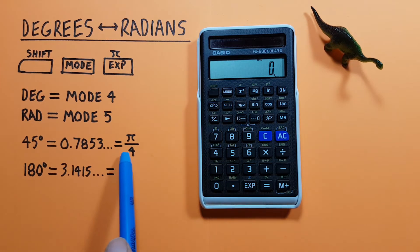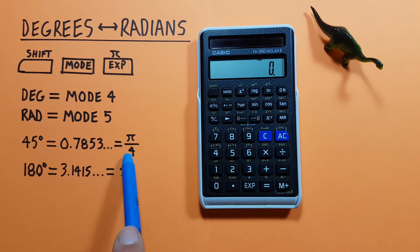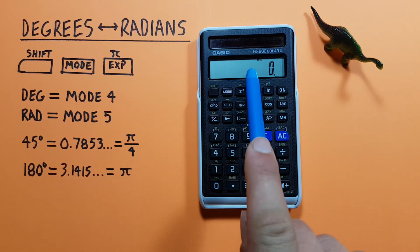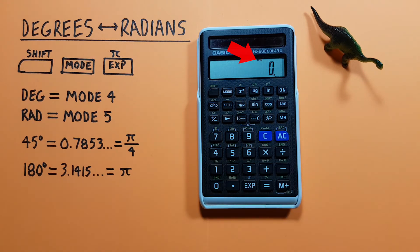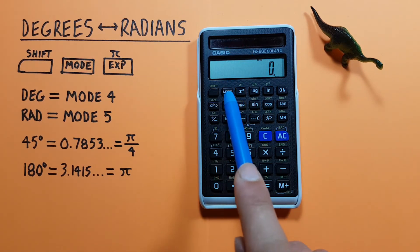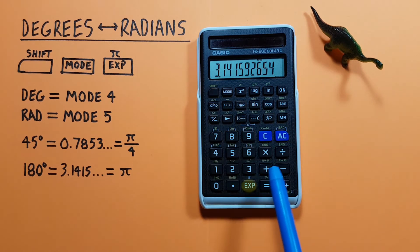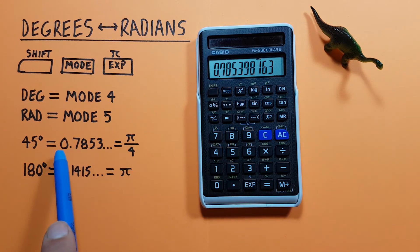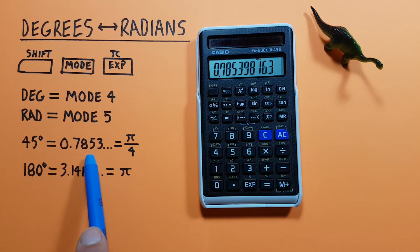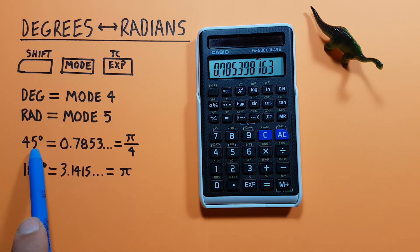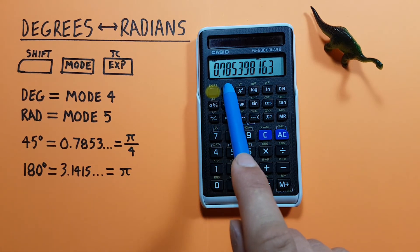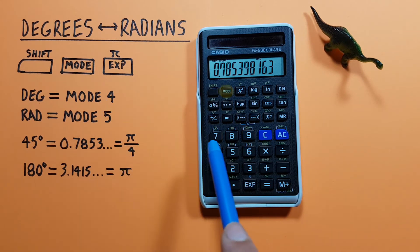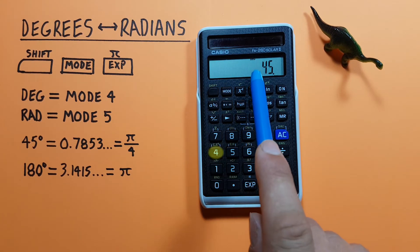What if we're given radians and want to get that in degrees? Again we want to start in the mode that we're entering. Since we're starting with radians we want to start in radians mode, and we're already in that so we're good to go. So we can enter our radians as shift pi divided by 4 and see that gives us 0.7853 decimal again. Now to convert this to degrees we press shift mode and then 4 for degrees mode, and we see we get 45 degrees.